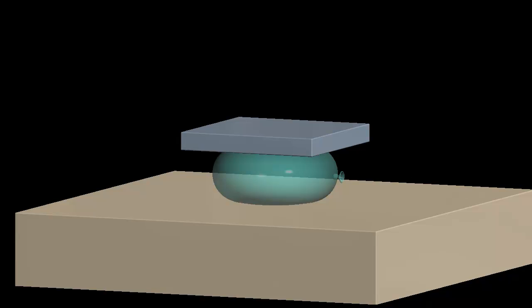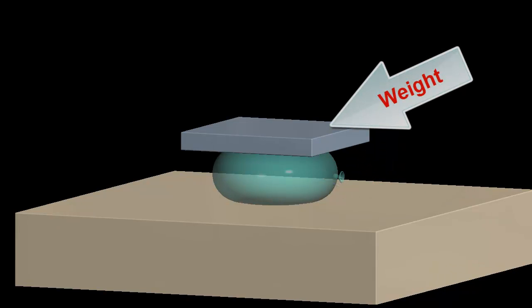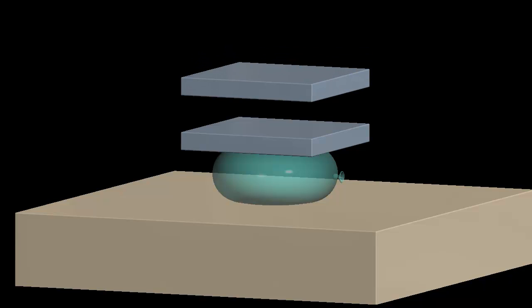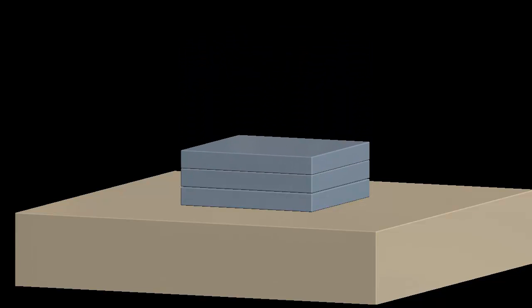In this animation, this plate represents a part that is being damaged by cavitation. The inflated balloon represents a gas bubble that is formed in the fluid, and this weight represents the fluid pressure that acts on the surface of the gas bubble. Notice that the balloon is able to support a certain amount of weight, but at some point it is no longer able to support the increasing weight and eventually collapses under the load. Having lost its support, the weight crashes down on the surface of the part.